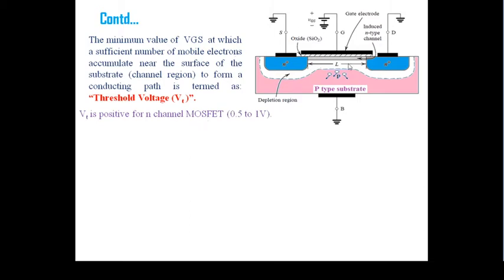If this is a P-channel or PMOS, we have to take an N-type substrate with P+ source and drain regions, making a P-region at the channel. So we have to give a negative gate-to-source voltage. Therefore, the threshold voltage VT is negative for the P-channel MOSFET.